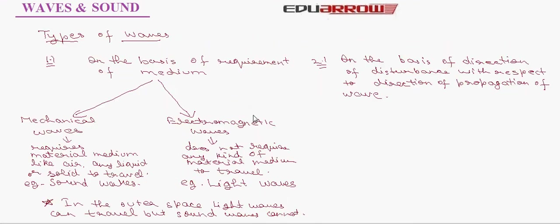Now let us discuss about types of waves. The waves are divided into two categories on the basis of requirement of medium. On the basis of requirement of medium, the waves are divided into mechanical waves and electromagnetic waves. Mechanical waves are those waves which require material medium like air, any liquid or solid to travel. Example, sound waves.